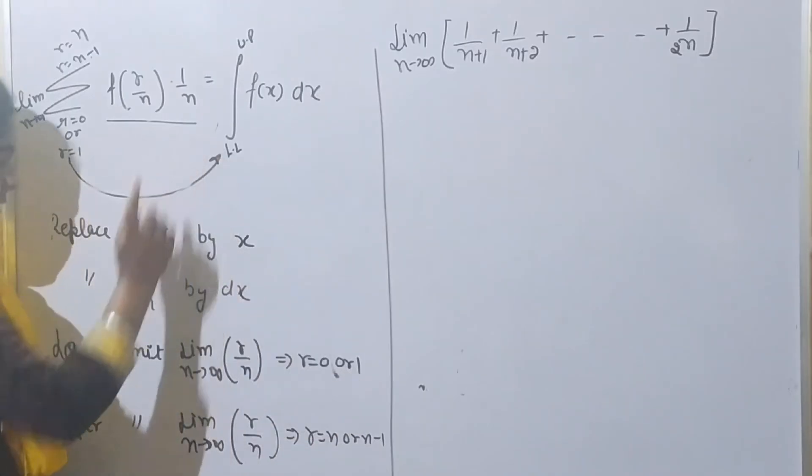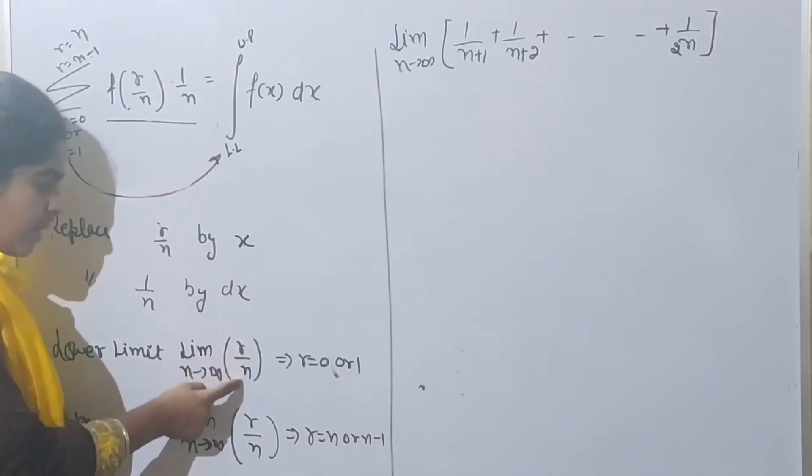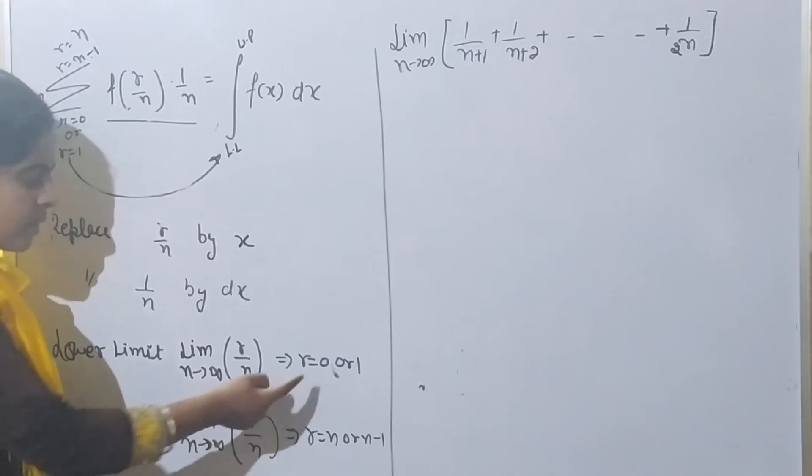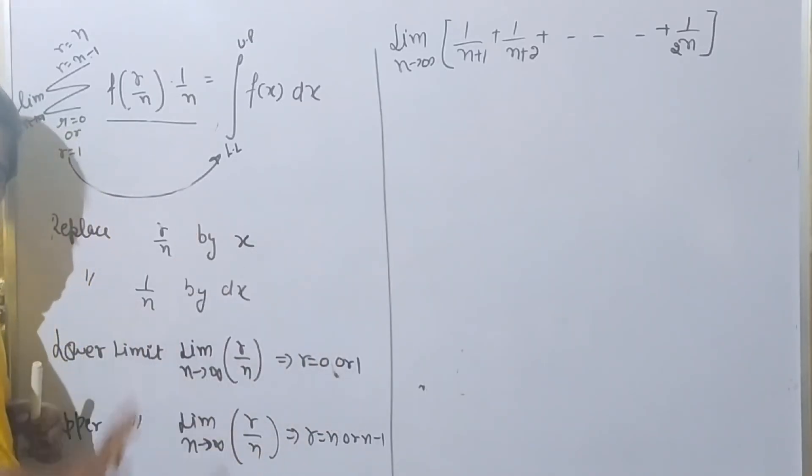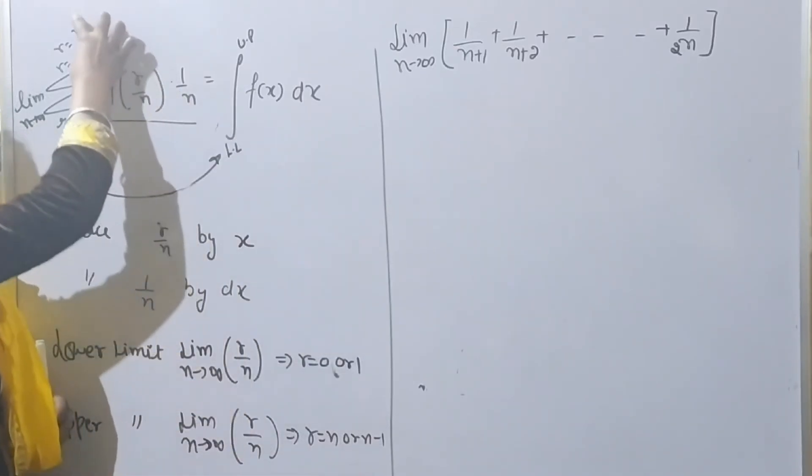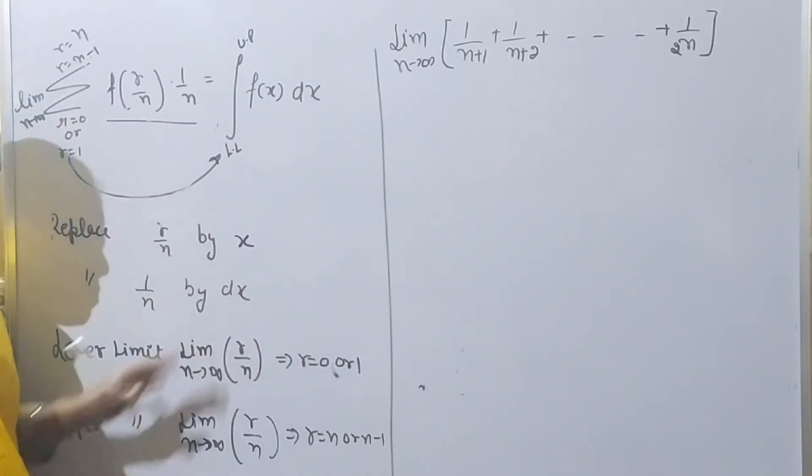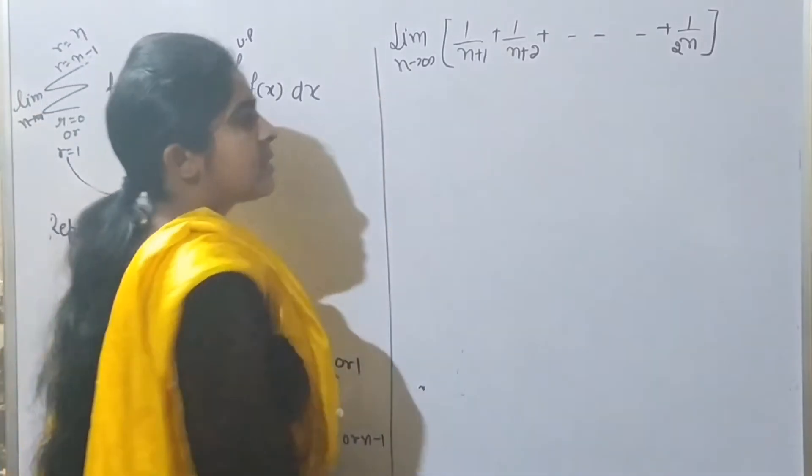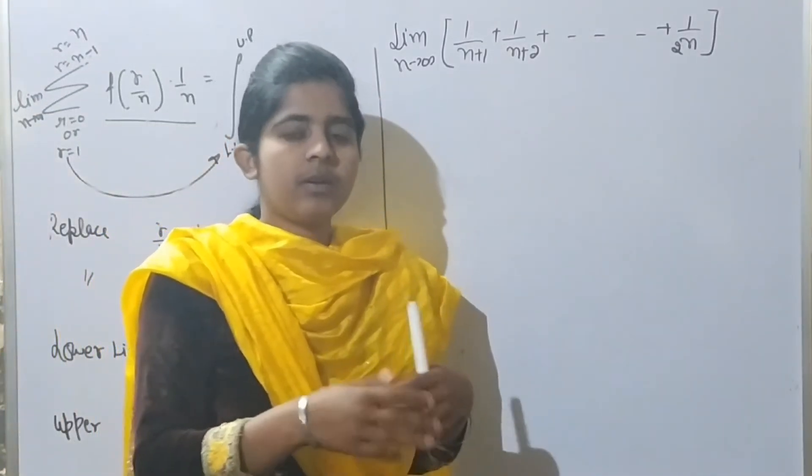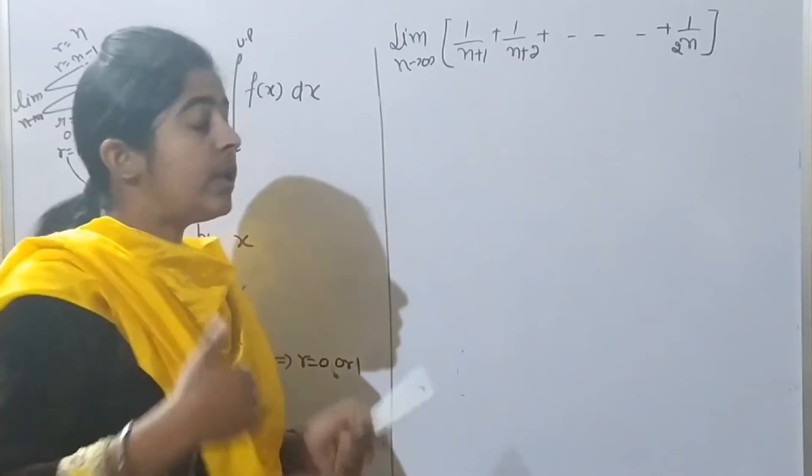We need to create limits. For lower limits, where r by n appears, when r is 0, you can write 0. For upper limits, if r goes to n, with limit n to infinity, the upper limit will be determined from the ratio. This is how to write the series in integral form.